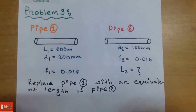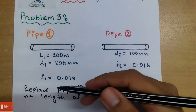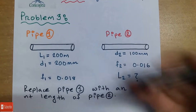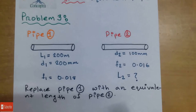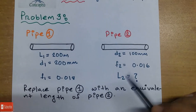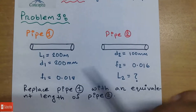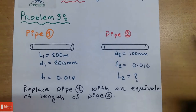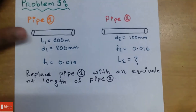I am going to replace the pipe tube with the equivalent length of the pipe tube. I want to replace pipe 1 with an equivalent pipe 2. First of all, the equivalent length formula is the correct formula to use.